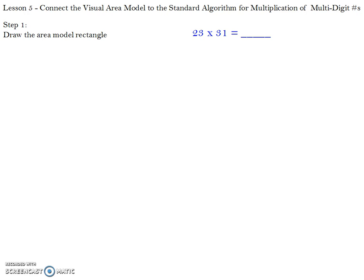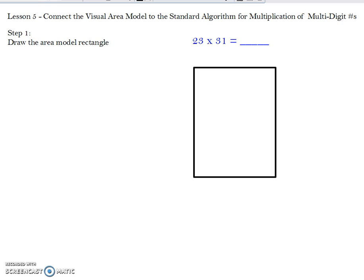Step one is you want to draw the area model rectangle. It doesn't matter which way you draw your rectangle, you just want to make sure that you know which numbers are on top and which numbers are on the side. You also might want to make your rectangle big enough to hold your work inside. If you do it too small, you won't have enough room to write your numbers.